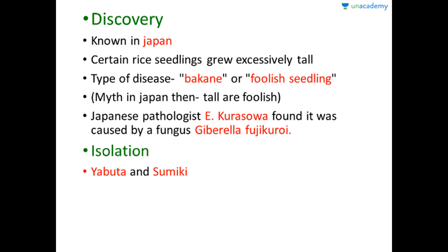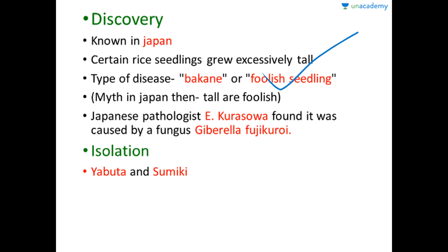How was gibberellin discovered? It was first known in Japan. Japanese people observed that certain rice seedlings grew excessively tall, beyond their normal length. They named this disease 'bakane,' which means foolish seedling.